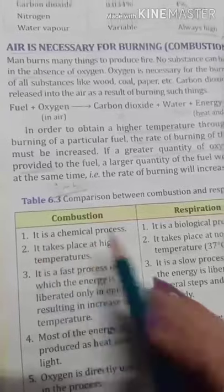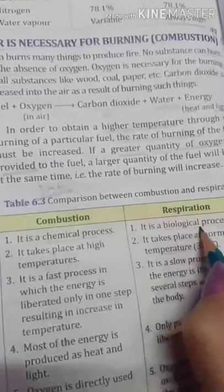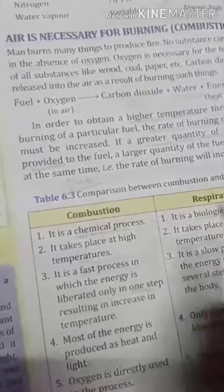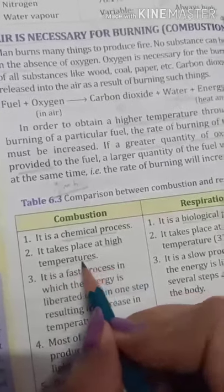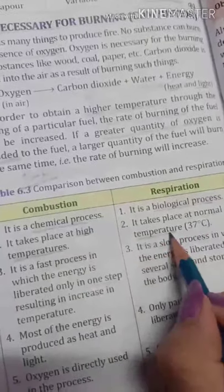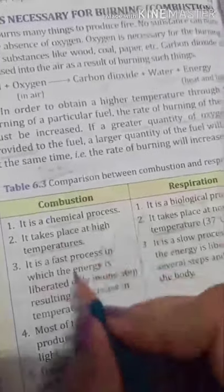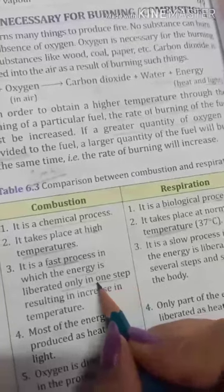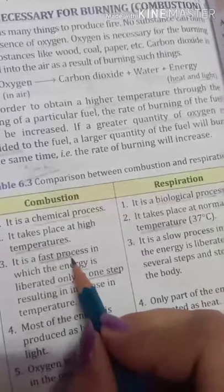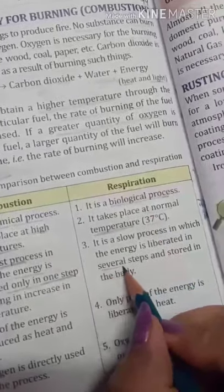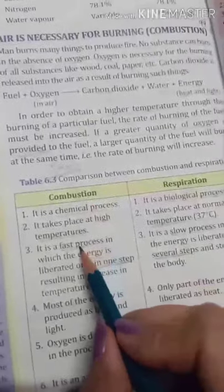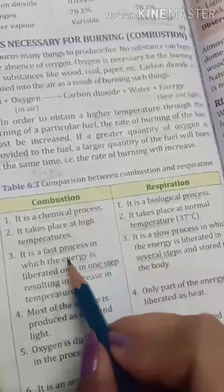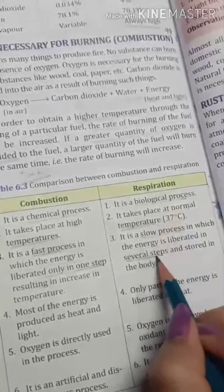Next we have a comparison between combustion and respiration — this is very important. In combustion, it is a chemical process, whereas respiration is a biological process occurring in biological systems. Combustion takes place only at high temperature, but respiration takes place at normal temperature, near about 37 degrees Celsius. Combustion is a fast process because energy is liberated in only one step, but respiration is a multi-step process, so it is a slow process.